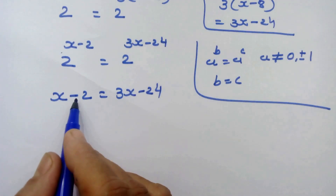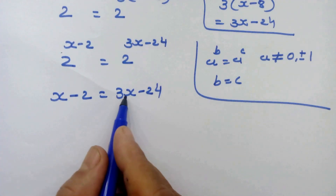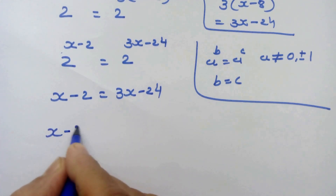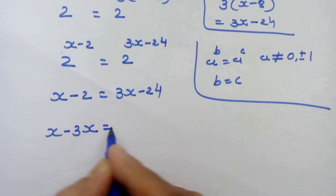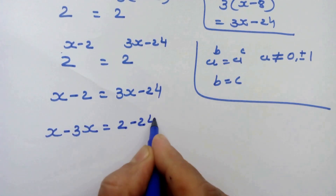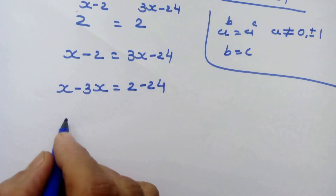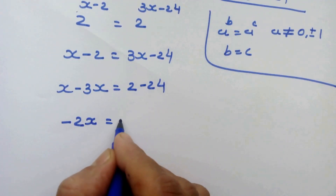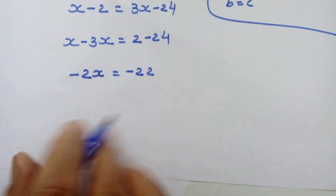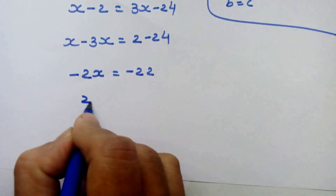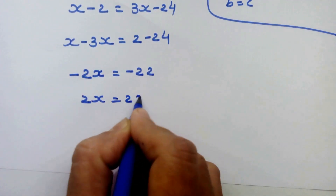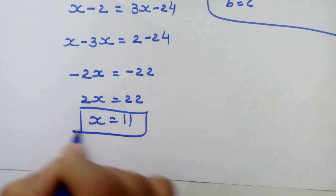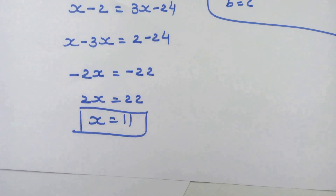Now let's move minus 2 to the right-hand side and 3x to the left-hand side. So x minus 3x is equal to 2 minus 24. So we have minus 2x is equal to minus 22. So 2x is equal to 22, and therefore x is equal to 11. This is our answer.